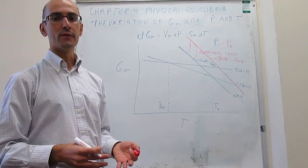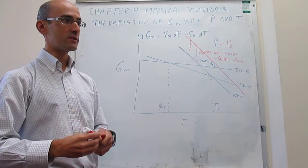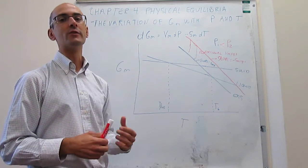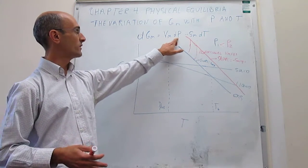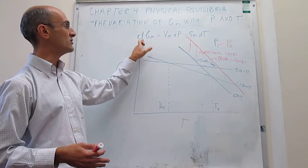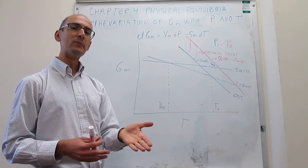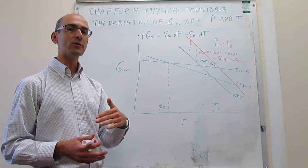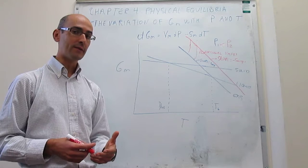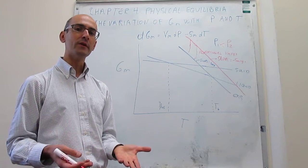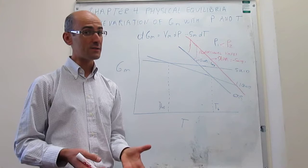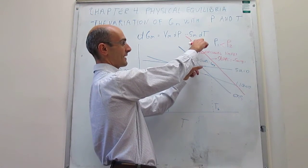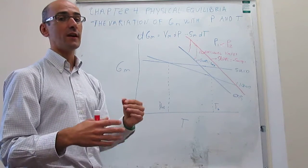We're going to do exactly the same thing for the solid and the liquid — examine how those lines would change for an increase in pressure. Again, when we increase the pressure, the molar Gibbs energy should increase according to the molar volume. But here's an important thing: the molar volume of the liquid and the solid are going to be much smaller than the molar volume of the gas. For the case of water at ambient conditions, we know the difference is about a factor of a thousand. That means the offset for the gas line will be huge compared to the liquid and solid lines.